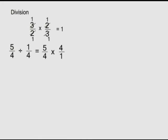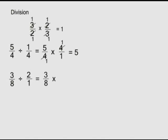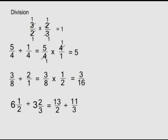You could also cancel out the four using the shortcut. Note we are changing the divisor, not the dividend. Three over eight divided by two: make two a fraction — two over one — its reciprocal is one over two, so three over eight times one over two gives three over sixteen. Six and one over two divided by three and two over three: convert to improper fractions — thirteen over two divided by eleven over three. The reciprocal of eleven over three is three over eleven, so thirteen over two times three over eleven gives thirty-nine over twenty-two.